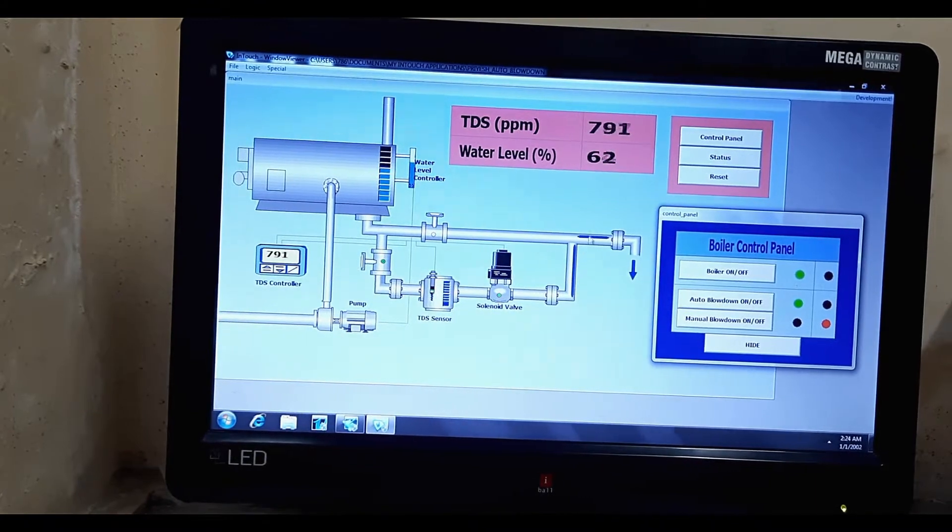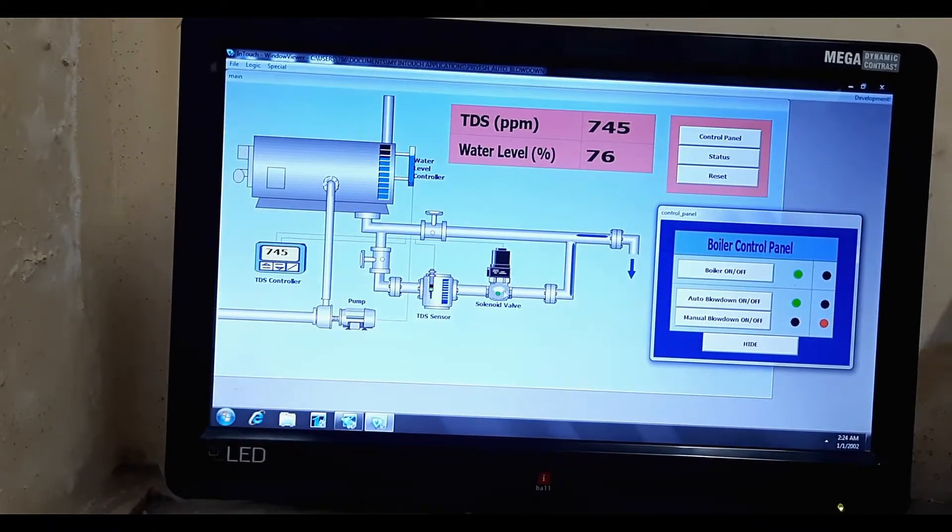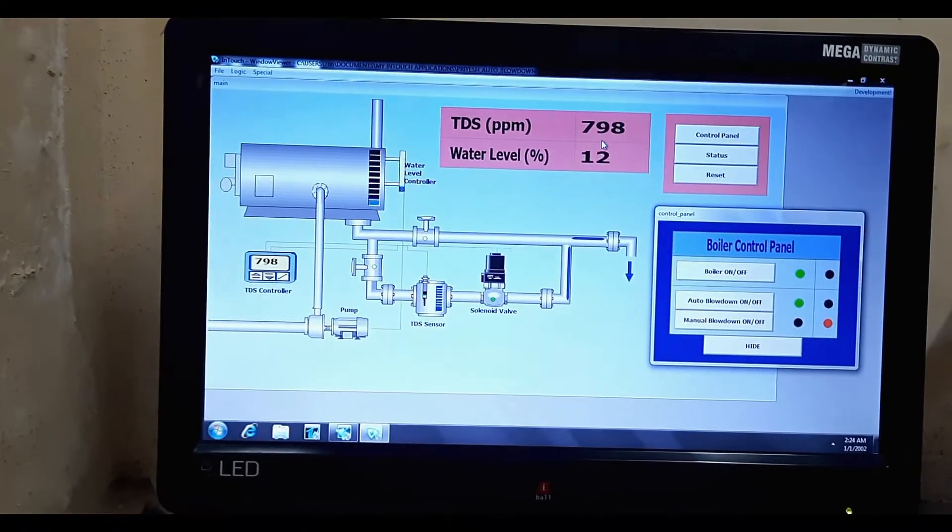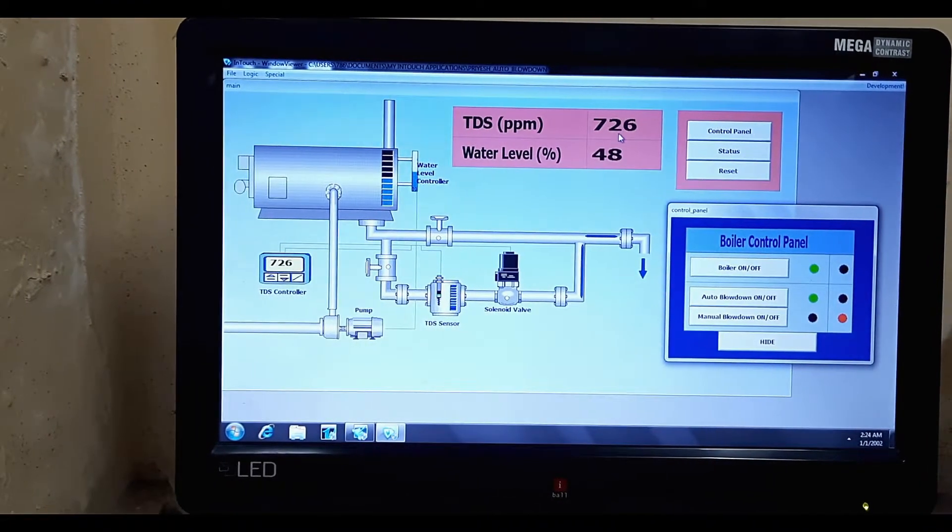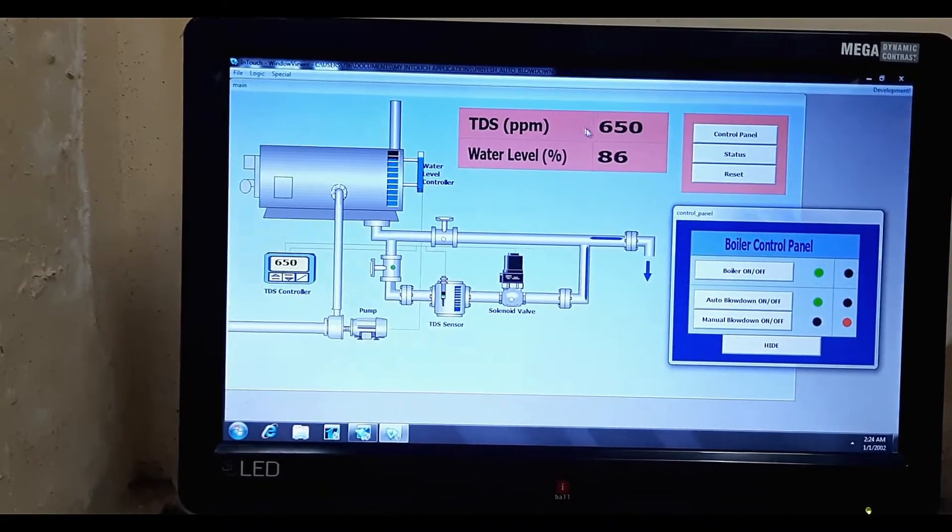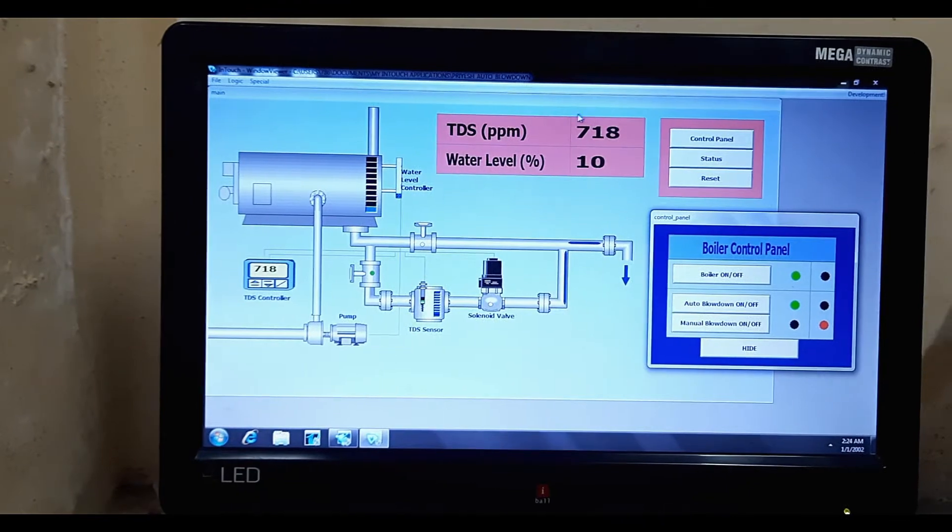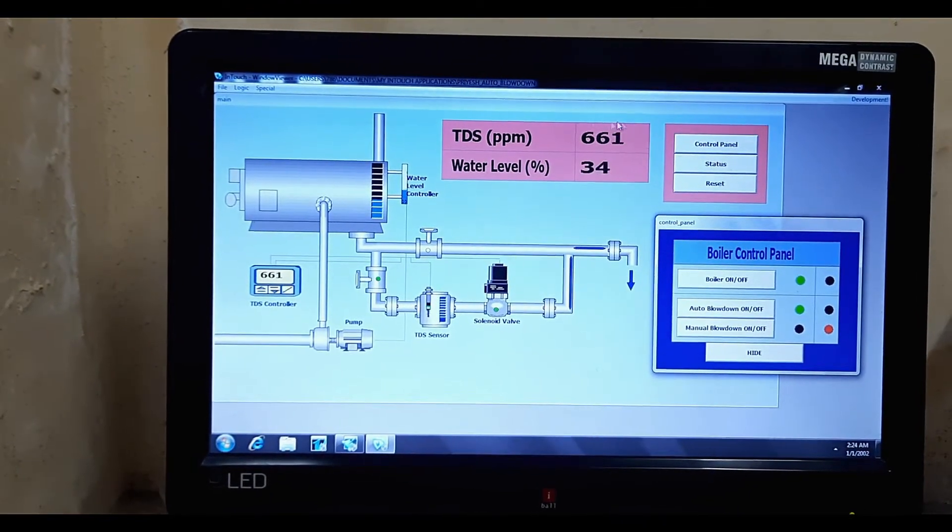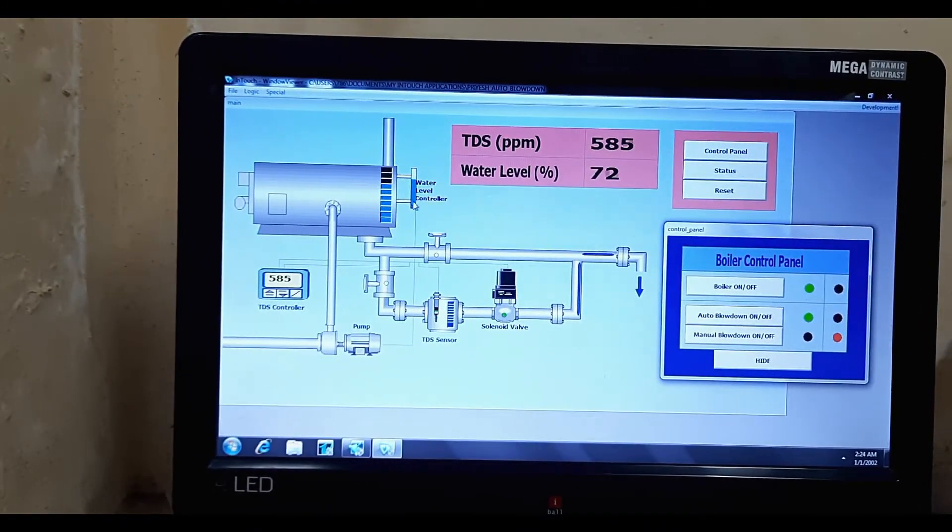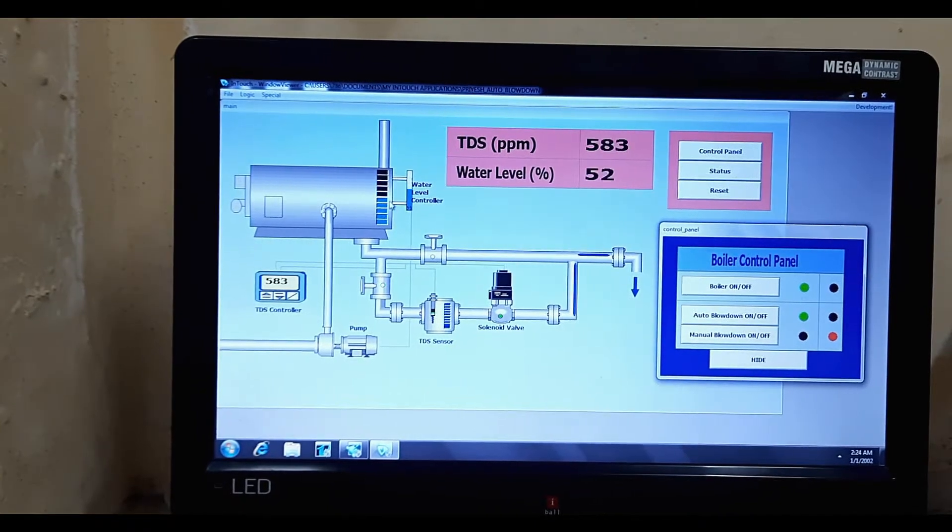And it will stop, like this solenoid valve will turn off when this TDS becomes 500. Now TDS means total dissolved solid of any liquid, in this case it's water. So as we heat up water to create more steam, more salts get accumulated and the TDS increases.